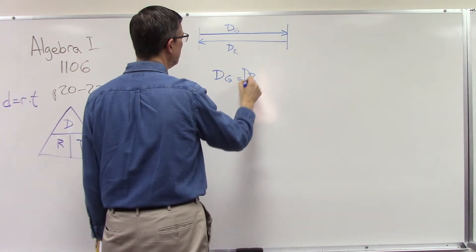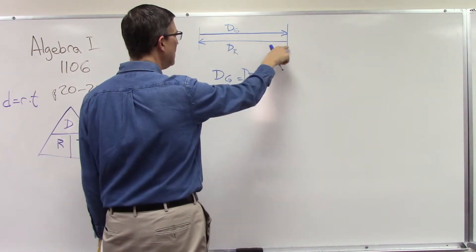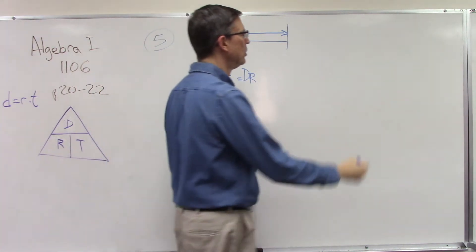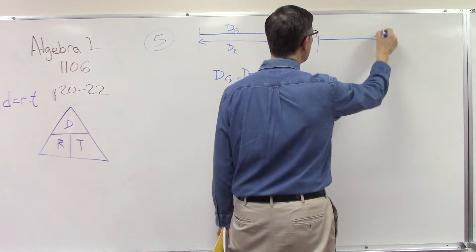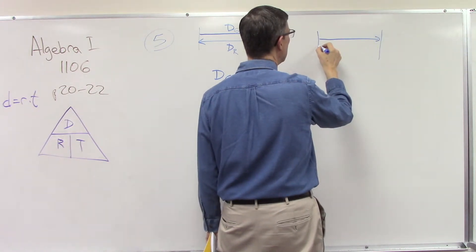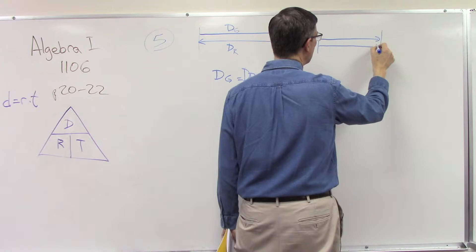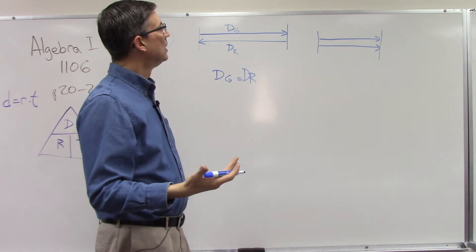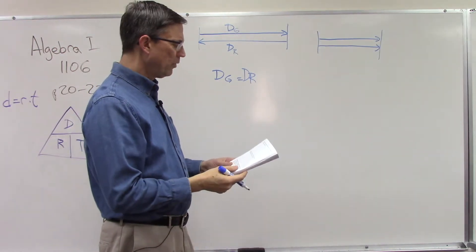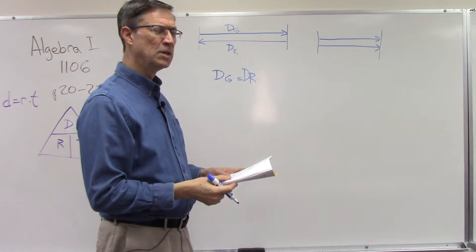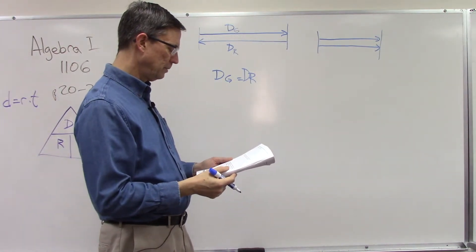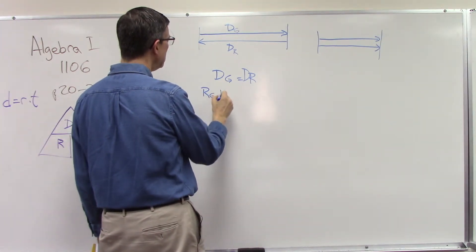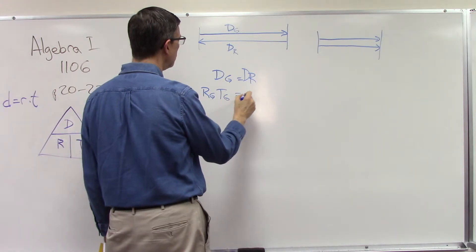We know that the distance going is going to equal the distance returning, because the plane comes back to the same place. Some problems have somebody leaving one way and someone chasing them — by the time they catch them, they've gone the same distance. In just about all of these problems the two distances will be equal. So distance is rate times time: r_g × t_g equals r_r × t_r.